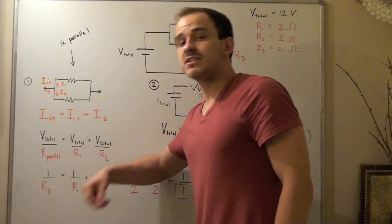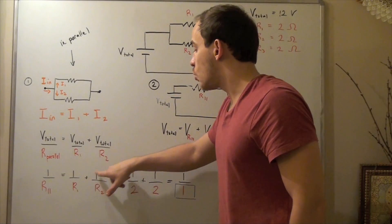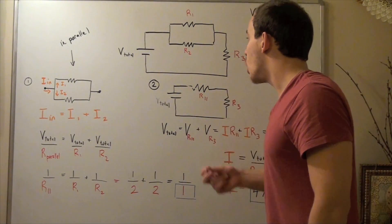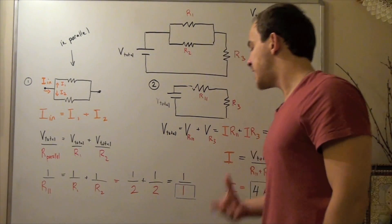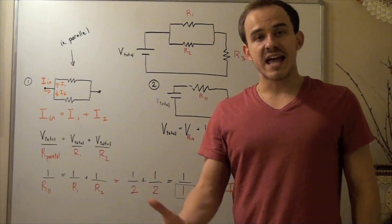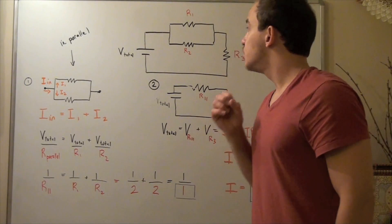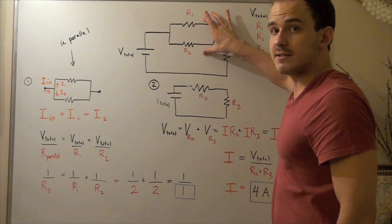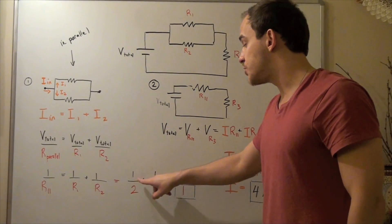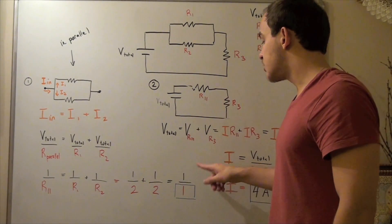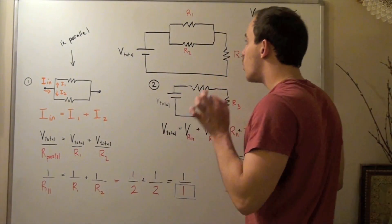We can divide each side by V total and our V totals will cancel out. So 1 over resistance due to the parallel resistors equals 1 over resistor 1 plus 1 over resistor 2. Now we know these are simply 2 ohms. We plug them into our equation and get 1/2 plus 1/2 equals 1 over 1. So we find that our resistance due to the combination of these is simply 1 ohm.